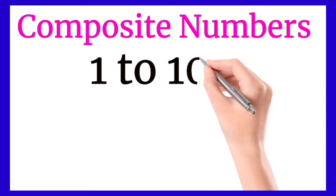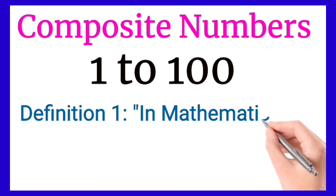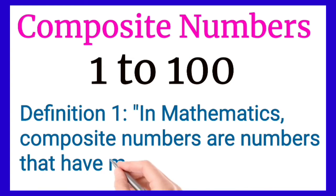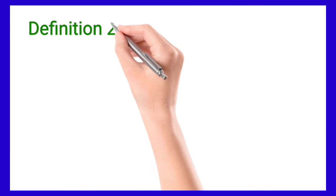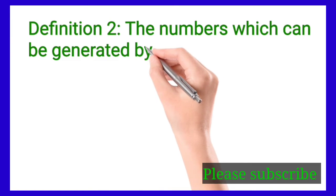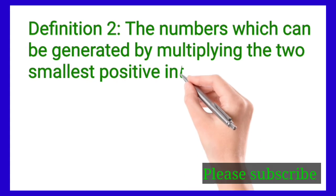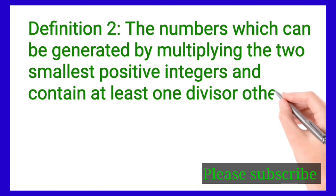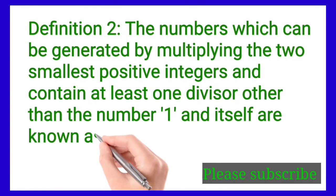Composite numbers 1 to 100 — definition. In mathematics, composite numbers are numbers that have more than two factors. The numbers which can be generated by multiplying the two smallest positive integers, and contain at least one divisor other than the number one and itself, are known as composite numbers. These numbers always have more than two factors.